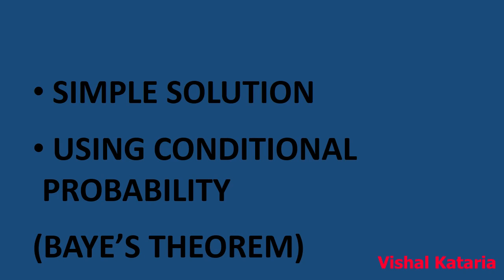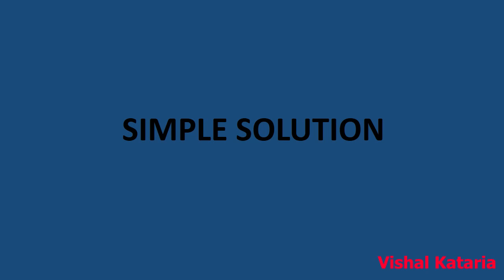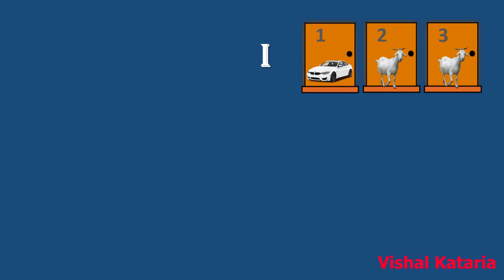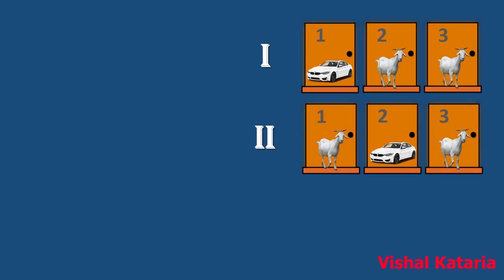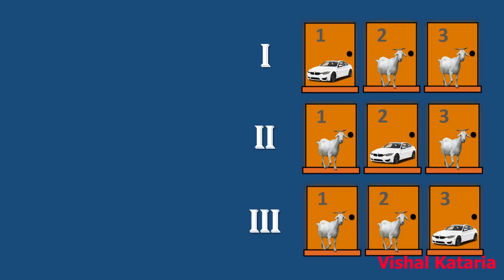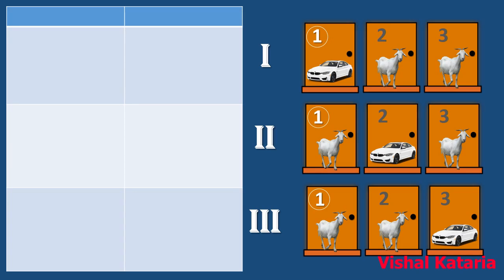Let's start with the simple solution. There are three possibilities: the first is that the car is behind door number one, the second is that the car is behind door number two, and the third is that the car is behind door number three. All three cases will have equal probabilities. Let us consider that you have already selected door number one, and let's see what happens if you stick to door number one versus if you switch to the other door.